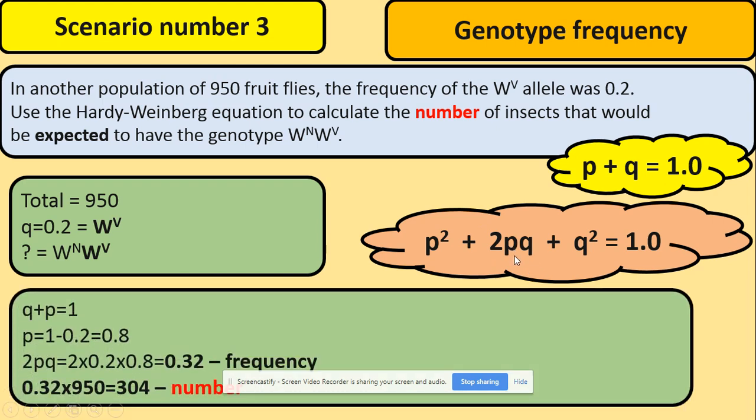So what do we need to do? Again, use p and q equals one. Work out the frequency of p which is 0.8, and the frequency of heterozygous, 2pq, that they're asking us for is 0.32.